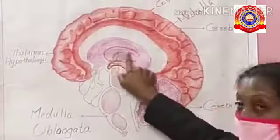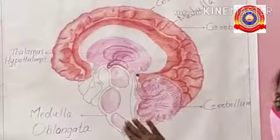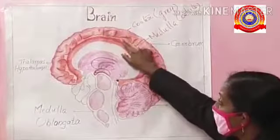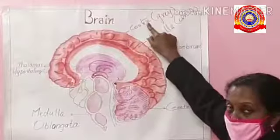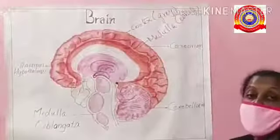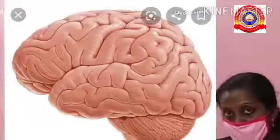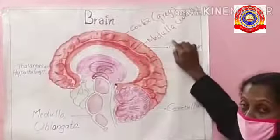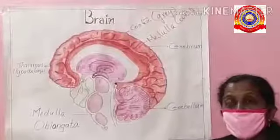The thalamus and hypothalamus are visible in the diagram — the hypothalamus is below the thalamus, and the medulla oblongata is also identified. The cerebrum contains folds and fissures. The outer part of the cerebrum is called the cortex, made up of gray matter, and the inner part is made up of white matter.